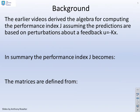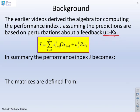Some background. The earlier videos derived the algebra for computing the performance index, assuming the predictions are based on perturbations about feedback u equals minus kx. Let's take our performance index, then j. There it is, an infinite horizon performance index with a q and an r.